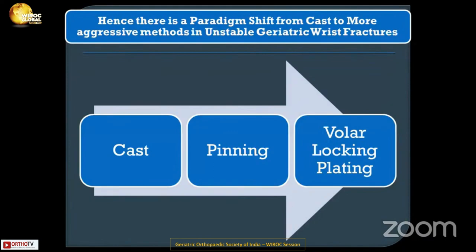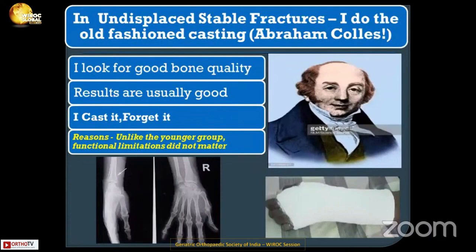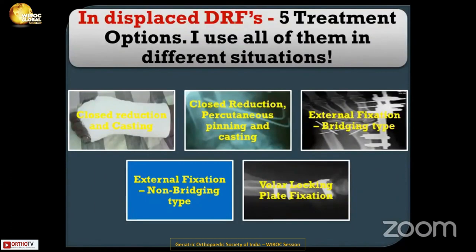This is the modern geriatric patient, and we need to look at the demands of these patients — young yet old — whose requirements have changed drastically. Hence, there is a paradigm shift from cast to more aggressive methods in unstable geriatric wrist fractures. In undisplaced, stable fractures, I do the old-fashioned casting, look for bone quality, and the results are usually good. Unlike in younger groups, functional limitations do not matter as much in geriatric patients.